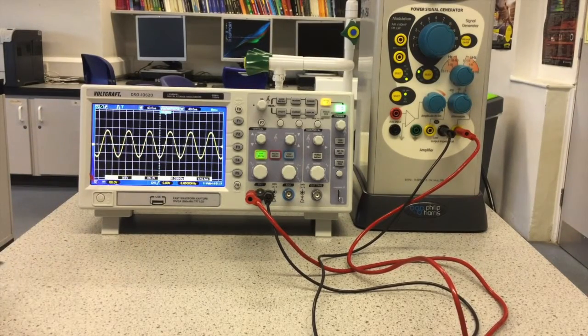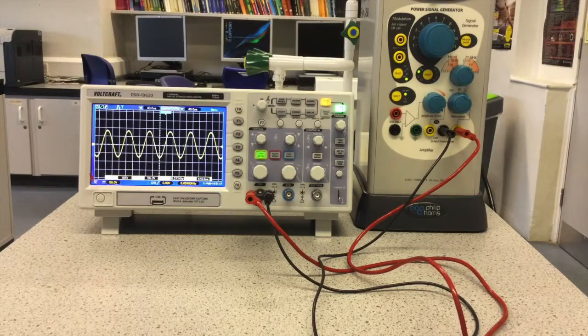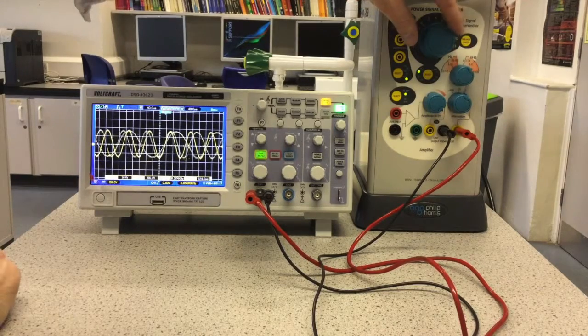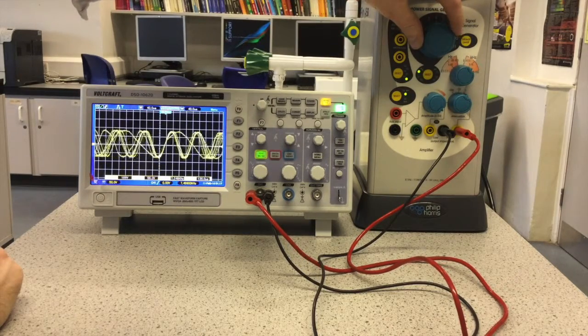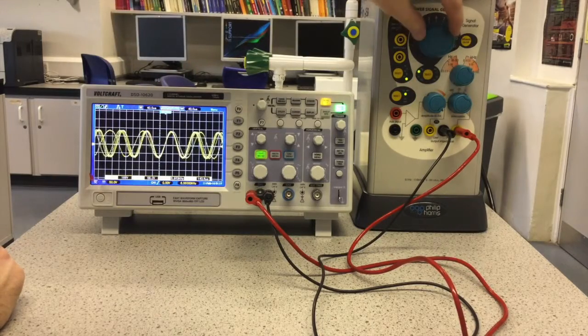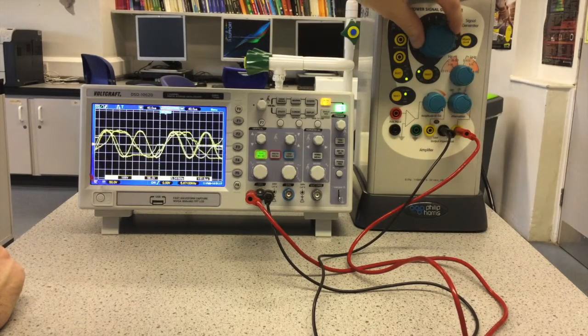That's how you use a digital oscilloscope, and then if I change the input signal, so if I reduce the frequency, you can see the signal changing on the screen there.